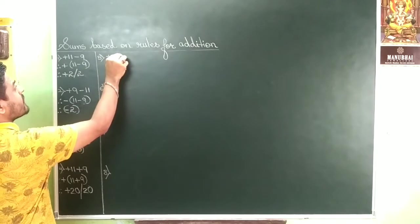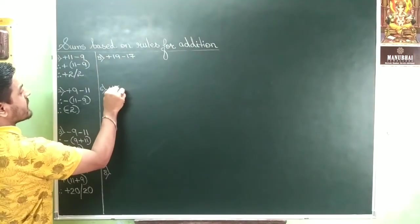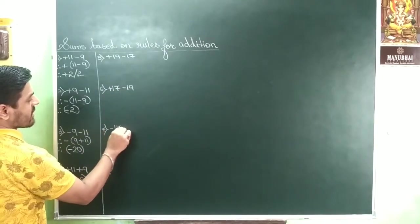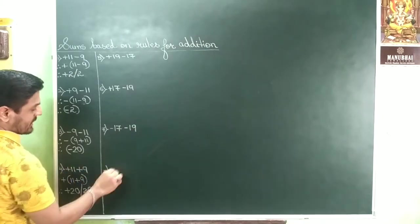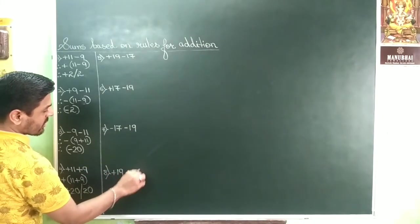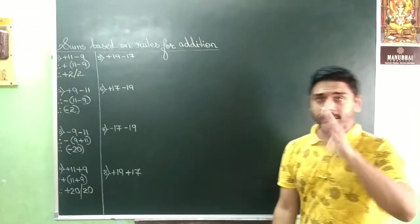Positive 19, negative 17, positive 17, negative 19, positive 19, positive 17. Correct? I have made 4 questions in my mind.